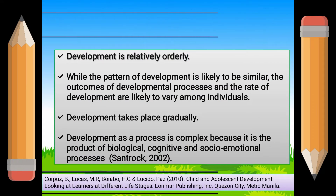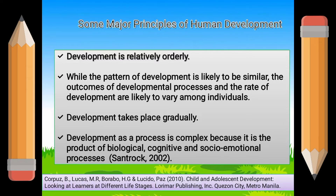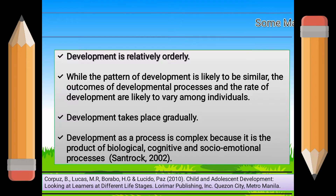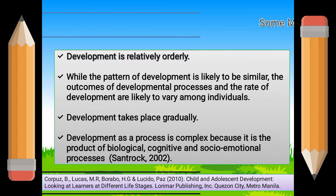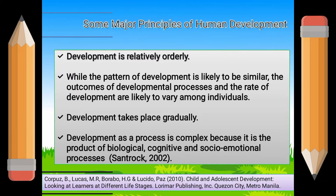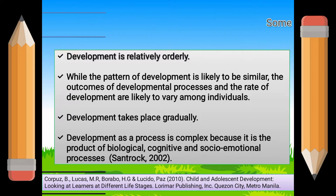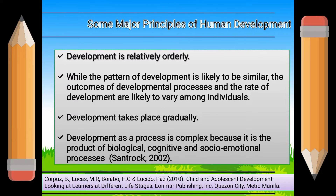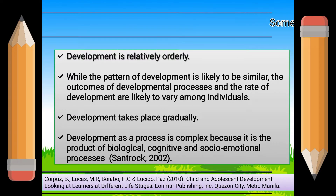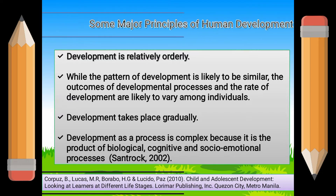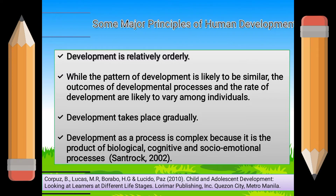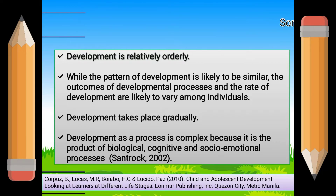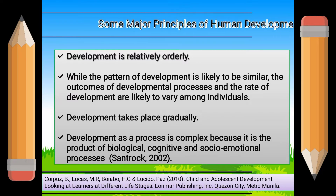Here are some major principles of human development. First, development is relatively orderly. Next, while the pattern of development is likely to be similar, the outcomes of developmental processes and the rate of development are likely to vary among individuals. Development takes place gradually. Development as a process is complex because it is the product of biological, cognitive, and socio-emotional processes, according to Santrock 2002.